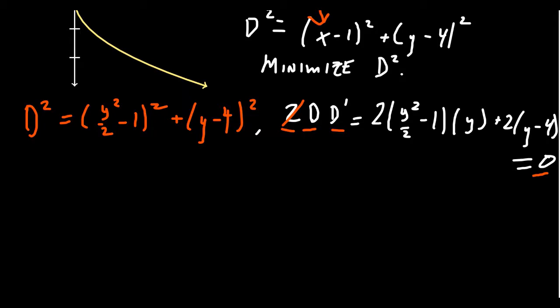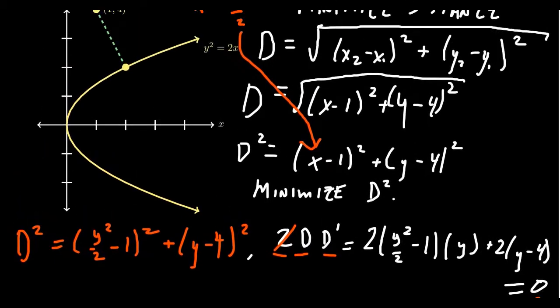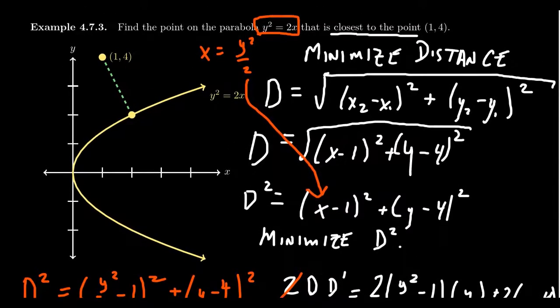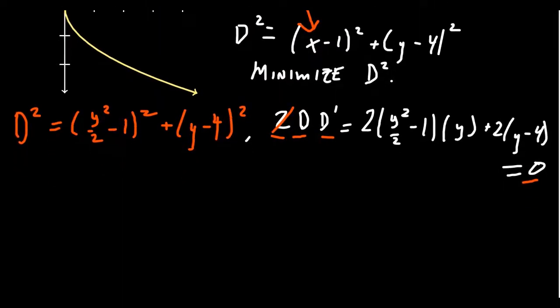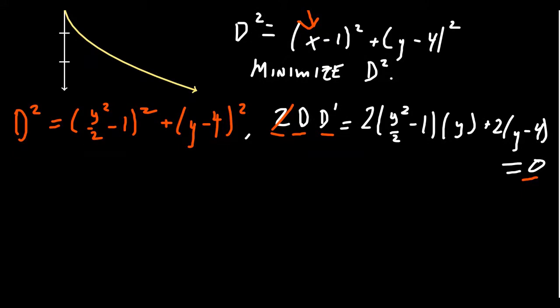Well, like we saw above, the d equals 0 would mean that 1, 4 lived on the parabola. But you can check that doesn't happen. y squared gives you 16, and 2 times x gives you 2. That's not a solution. So the distance does not equal 0 in this context. So the only way that this product equals 0 is if d prime equals 0. And that was the justification why we can work with distance squared instead of just distance.